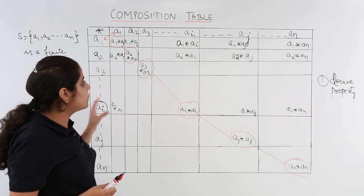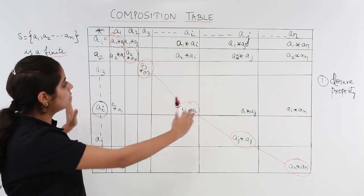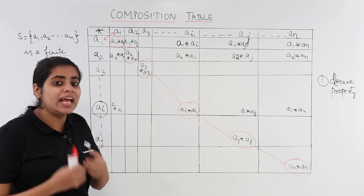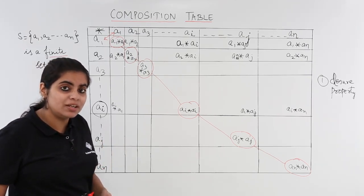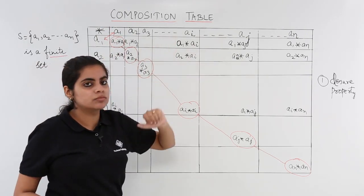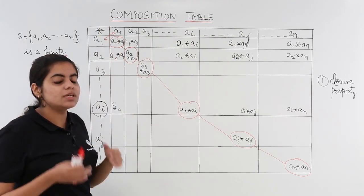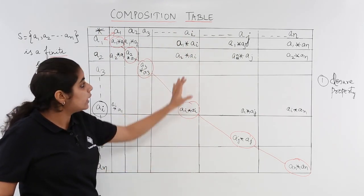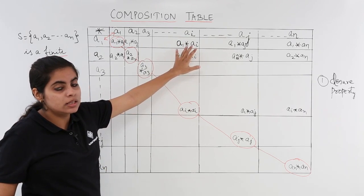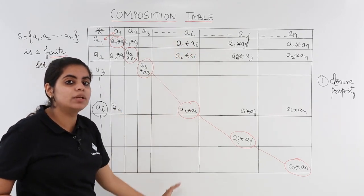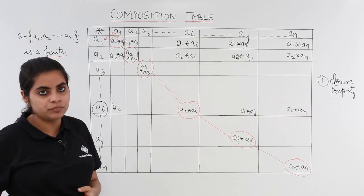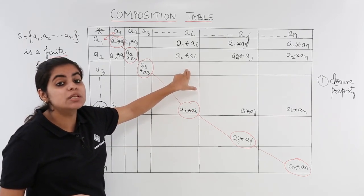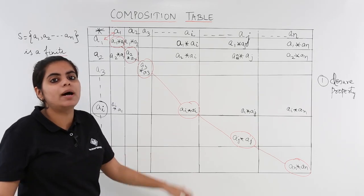The trick is you observe your composition table altogether, the whole composition table, and you check that is there any element which is repeated more than once in the same row or in the same column. Suppose I have in consideration the ith column. So a1 star ai, it comes only once. If it comes only once, every element will come only once, that means the closure property is followed. But suppose, for example, here also I have a1 star ai or a2 star ai, that means more than once. So I would say closure property is not followed, so it is not a binary operation.